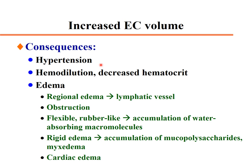Consequences of increased extracellular volume include hypertension associated with increased blood volume, hemodilution with decreased hematocrit, and edema. Edema can be regional such as in lymphatic obstruction, flexible or pitting edema from water-absorbing molecules, or rigid edema such as myxedema associated with hypothyroidism, or cardiac edema.